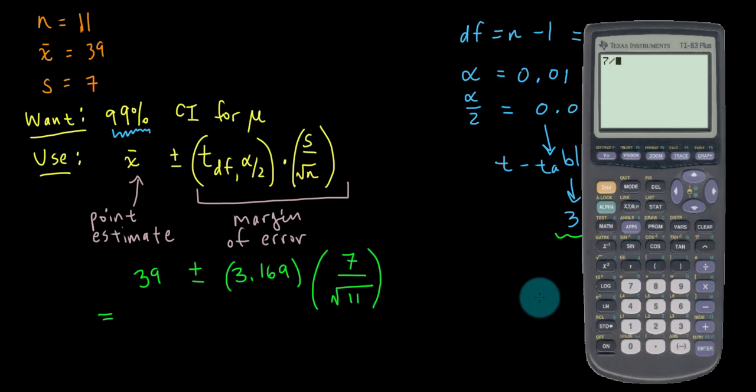Let's compute 7 divided by the square root of 11. Let's now multiply that 2.11 or so by 3.169. That is our margin of error, 6.688.